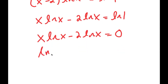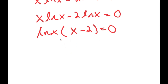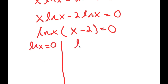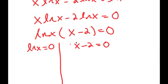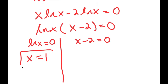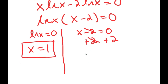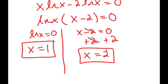I'm going to factor out ln x: ln x times (x minus 2) equals 0. This gives two equations: ln x equals 0, and x minus 2 equals 0. For ln x equals 0, we know that ln of 1 is 0, so x equals 1. For x minus 2 equals 0, adding 2 on both sides gives x equals 2. So x equals 1 and x equals 2 are my solutions.